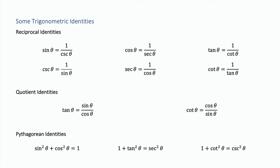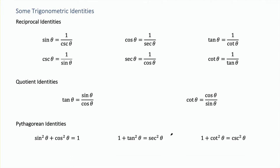Because our trigonometric functions all come from triangles, and there are only three sides of a triangle and we have the Pythagorean Theorem, we actually have a lot of identities—things that connect our functions. The first set here are the reciprocal identities, and this is just knowing that the sine and cosecant functions are reciprocals of each other.